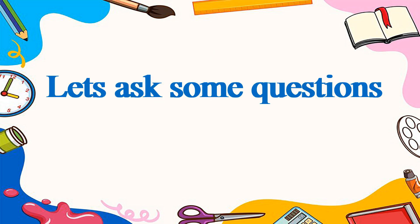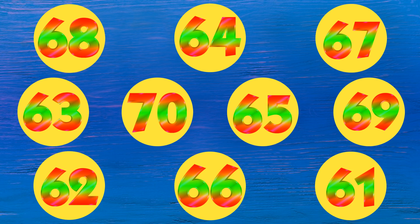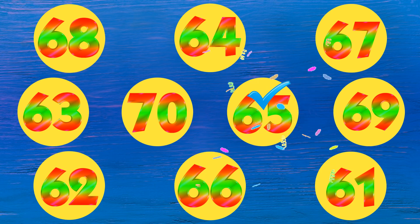Let's ask some questions. Select the right one. Which one is 65? 10, 9, 8, 7, 6, 5, 4, 3, 2, 1, 0. This is the right one.